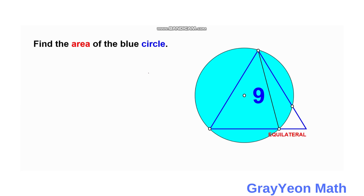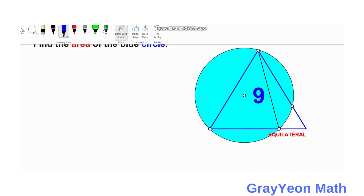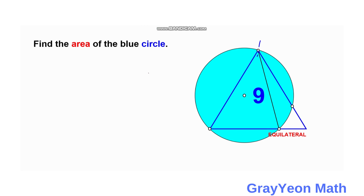The first thing we need to do is draw the radius from the two points of this circle. Let's say this is A, this is B, this is C, this is G, and this is D. We draw from A to the center and D to the center of the circle, forming a triangle with the 9-unit segment as one of its sides and the two radii of the circle.